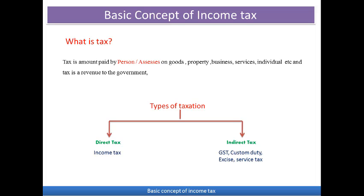Direct tax is a tax paid directly to the government on behalf of the individual, with no mediator in between. For example, income tax — you pay tax on your total income directly to the government. After calculating the tax liability on your salary or other income, whatever tax amount is due, you pay it directly to the government. There is no mediator between the government and the individual in direct tax.